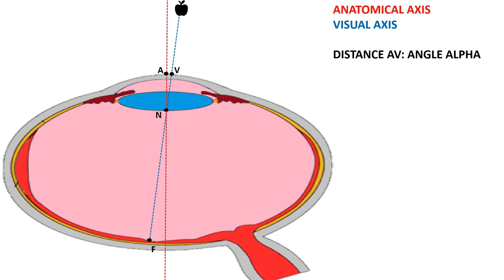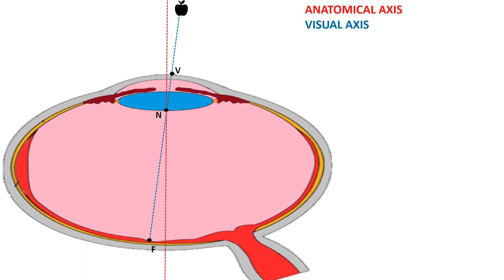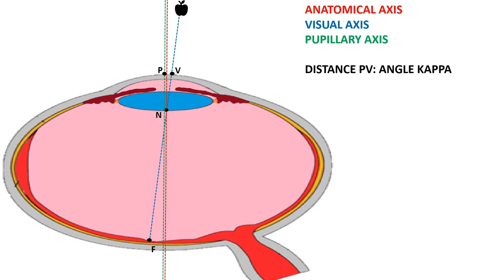If there is one thing we have understood about angle alpha, it is that it is very difficult to accurately measure clinically because we cannot manually measure the exact center of the cornea. So we have another axis to help us clinically. In a normal undilated pupil we can draw another axis called the pupillary axis, which passes through the center of the pupil perpendicular to the eye. This axis is very close, if not overlapping, to the anatomical axis. The angle between the pupillary axis and the visual axis is called angle kappa, most conveniently represented as the distance between point P, where the pupillary axis intersects the cornea, and point V, the first Purkinje image reflection.